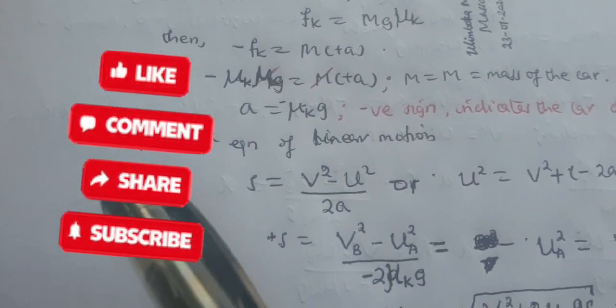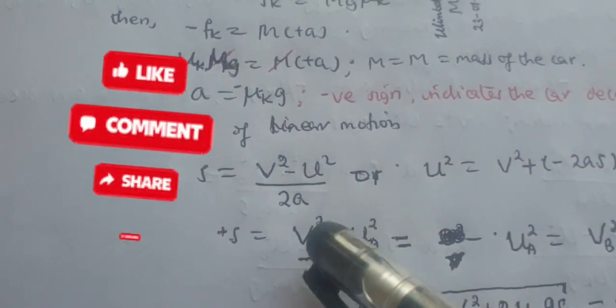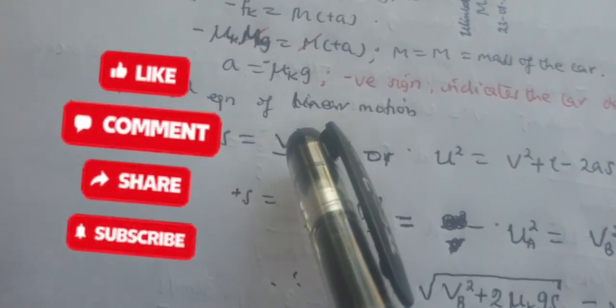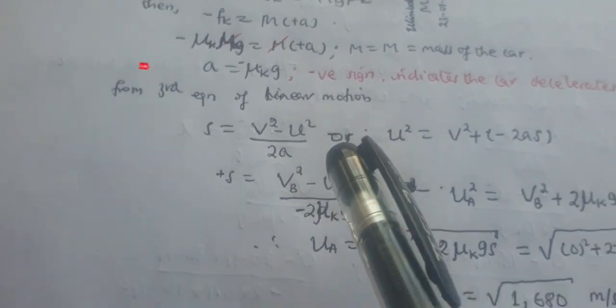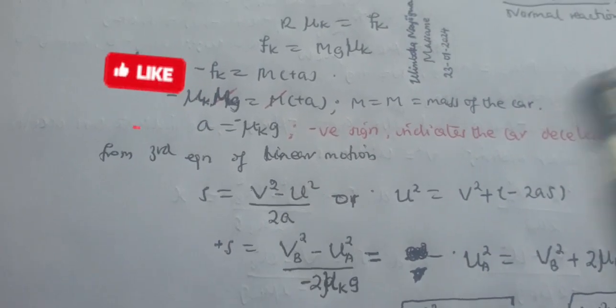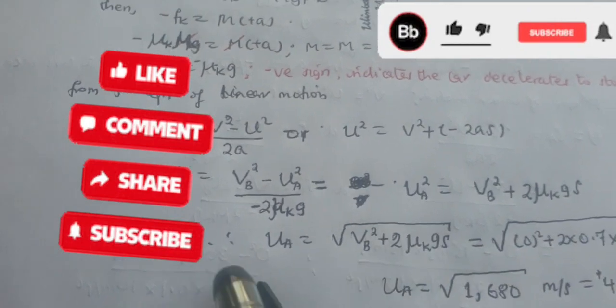Now from the third equation of linear motion, displacement equals final velocity squared minus initial velocity squared, divided by two times net acceleration in the positive direction.